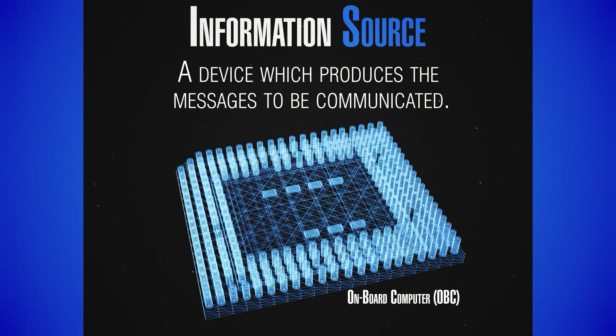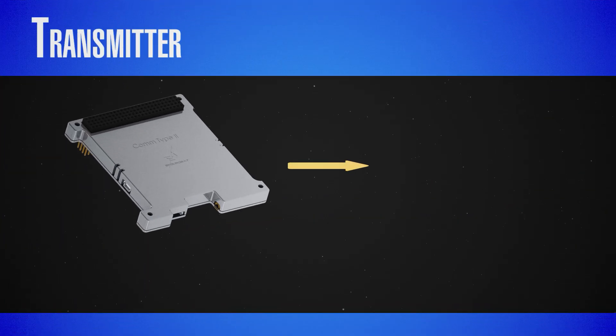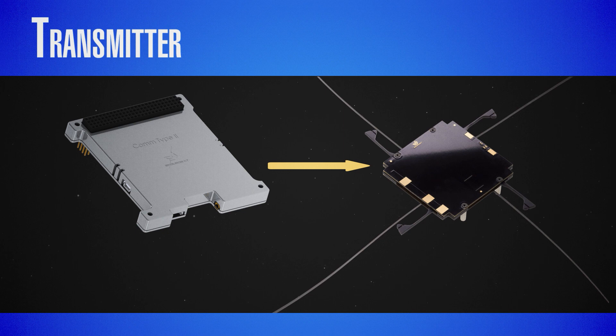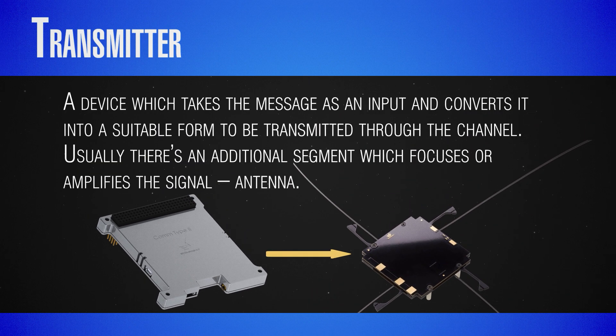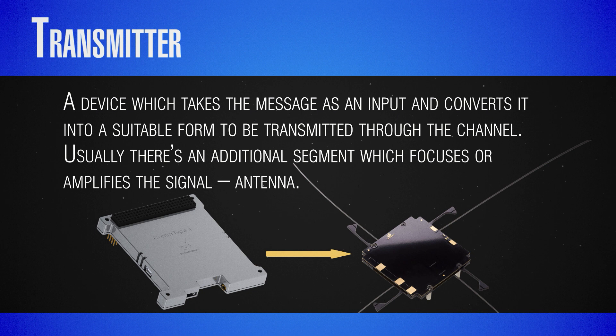The transmitter is a device which takes the message as input and converts it to a suitable form that can be transmitted over the channel. In our case, a device which modulates electromagnetic waves with the required information. Usually there is an additional component which focuses or amplifies the signal—we call that the antenna.